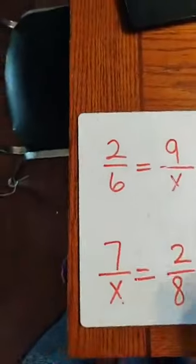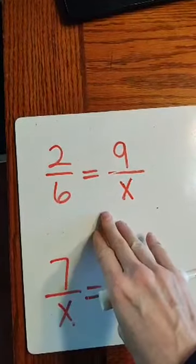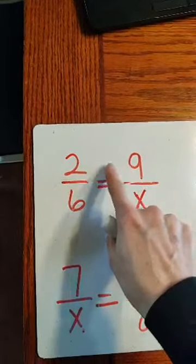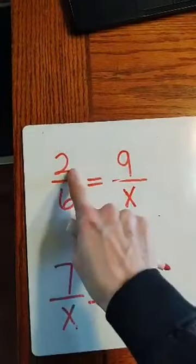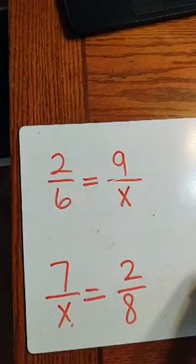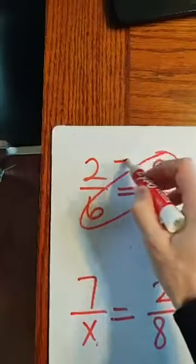So now I'm going to show you another way to solve proportions. So this is not so easy, because if I look at this, I can't figure out easily what 2 times what gets me 9. So another way to do this is what we call cross-multiply and then divide.